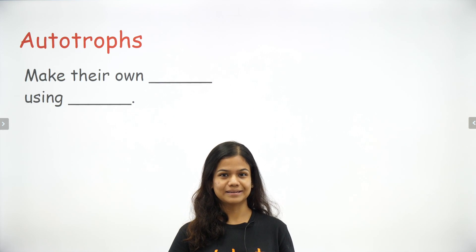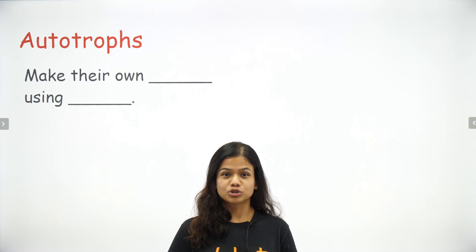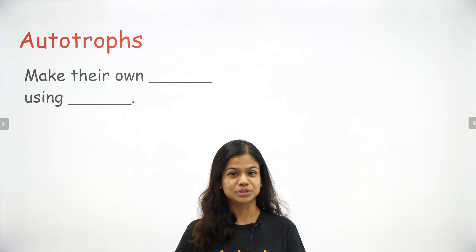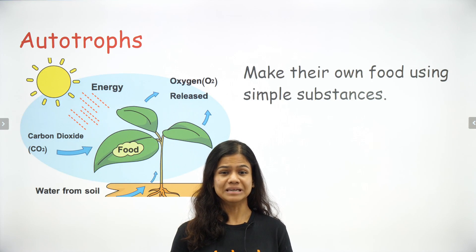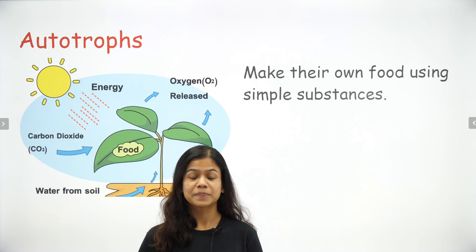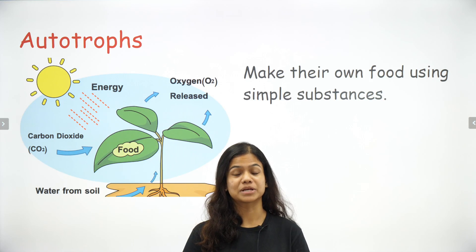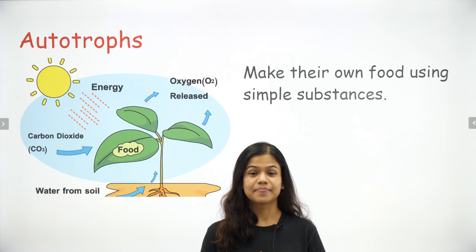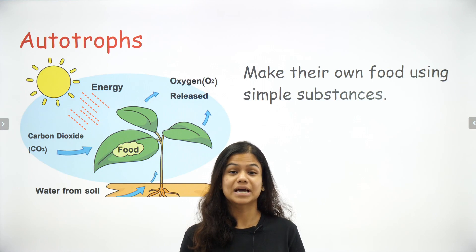Let's try to understand what autotrophs are. Plants make their own food using simple substances — water and carbon dioxide, in the presence of sunlight and chlorophyll. Can you guess what they exactly end up making? They end up making glucose, carbohydrate starch, and oxygen.